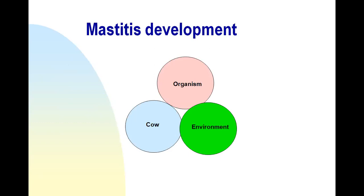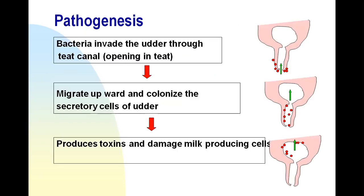Regarding how mastitis develops, you have to remember three factors: the organism, the cow, and the environment. The pathogenesis is straightforward — reading this slide carefully allows you to understand how mastitis takes place.